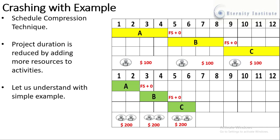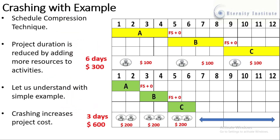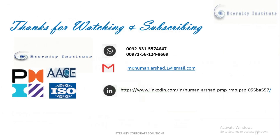Definitely, when we increase the number of resources, the cost also increases. We can conclude that crashing increases the project cost, but at the same time the duration decreases. In the normal scenario the project is completed in six days for $300, whereas with increased resources the project is completed in three days for $600. Thank you very much for watching and subscribing.